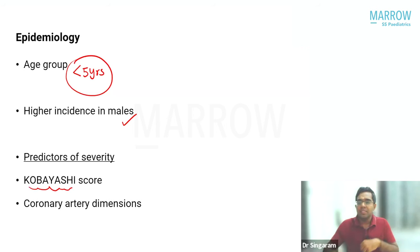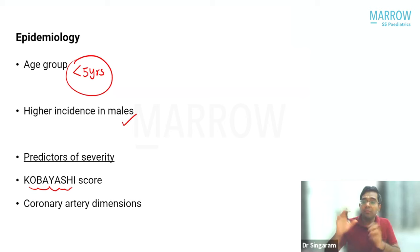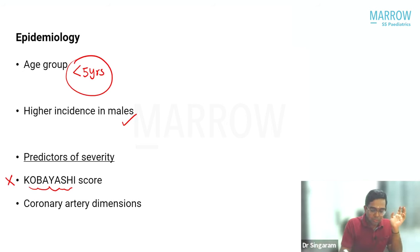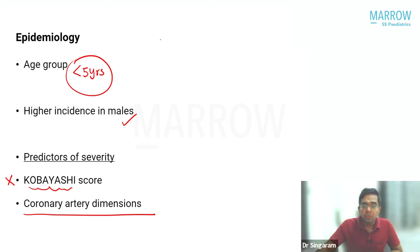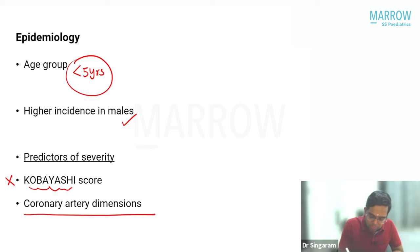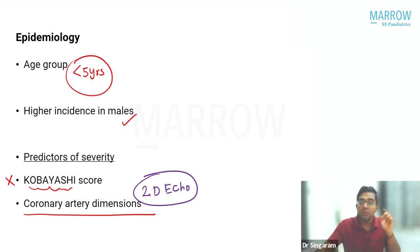Currently, severity of Kawasaki disease is predicted based on measurement of coronary artery dimensions, assessed by two-dimensional echocardiography. If asked which investigation helps in prognosticating a child with Kawasaki disease, the answer is two-dimensional echocardiography.